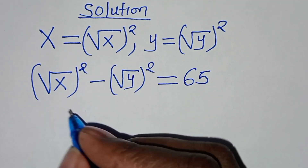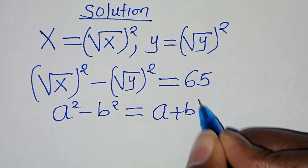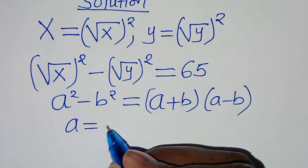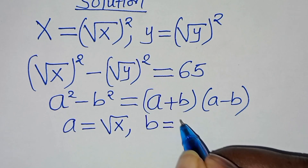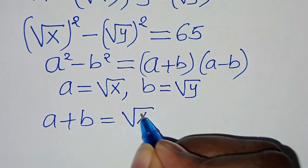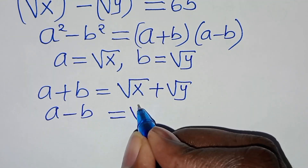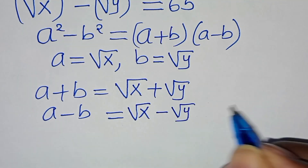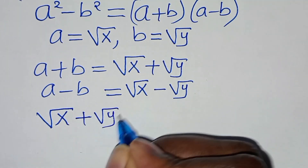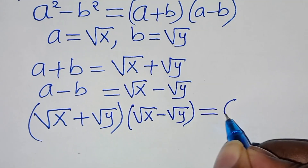We find that this equation is in the form of a squared minus b squared, which is the difference of two squares, which we can express as (a plus b)(a minus b). Here, a is equal to square root of x and b is equal to square root of y. So a plus b is square root of x plus square root of y, and a minus b is square root of x minus square root of y. This gives us (square root of x plus square root of y) multiplied by (square root of x minus square root of y) equals 65.